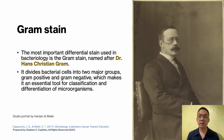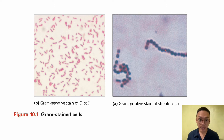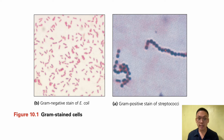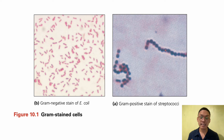The gram stain reaction is based on the difference in the chemical composition of bacterial cell walls. Gram positive cells have a thick peptidoglycan layer, whereas the peptidoglycan layer in gram negative cells is much thinner and surrounded by outer lipid-containing layers. Peptidoglycan is a polysaccharide composed of two subunits found only in bacterial cell walls: N-acetylglucosamine and N-acetylmuramic acid.